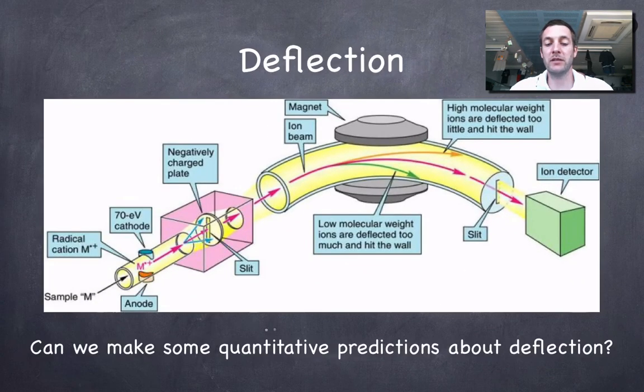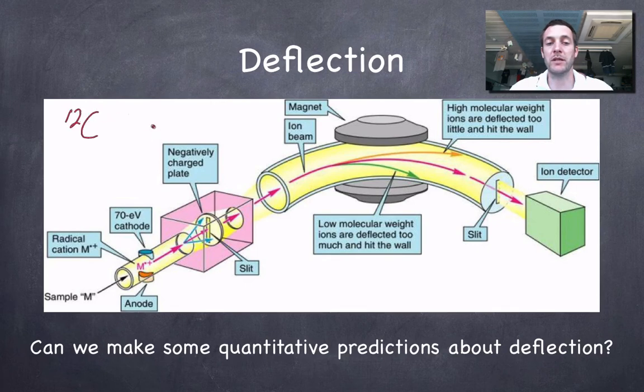Now, we should be able to make some quantitative predictions about the deflection. So, for example, let's say I had carbon-12 atoms in my mass spectrometer. And we had carbon-12 1 plus ions and carbon-12 2 plus ions. We should be able to decide which of those is going to deflect more in the field. It's going to be the carbon atoms or carbon ions with 2 plus charge because they'll be more affected by the field. And not only that, they should get deflected twice as much.